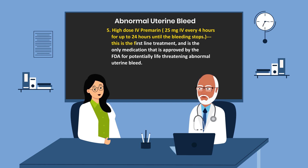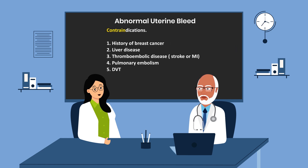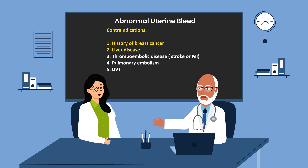Premarin is the first-line treatment and is the only medication approved by the FDA for potentially life-threatening abnormal uterine bleeding. Contraindications to using Premarin include a history of breast cancer, liver disease, or thromboembolic disease such as stroke, MI, pulmonary embolism, or DVT.